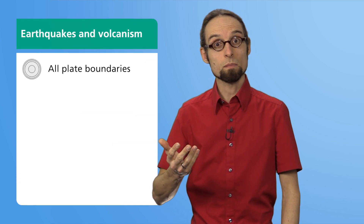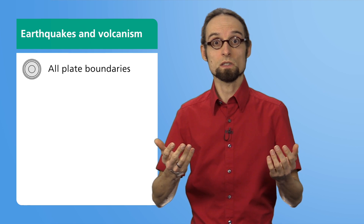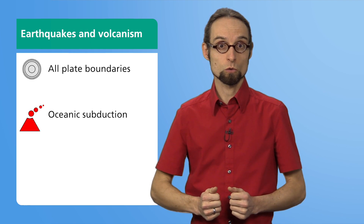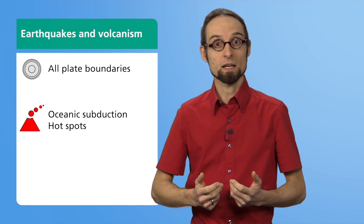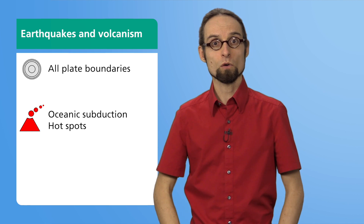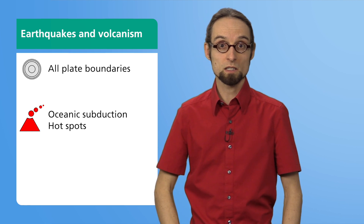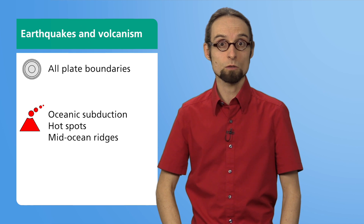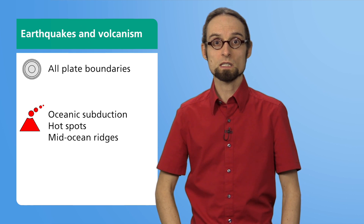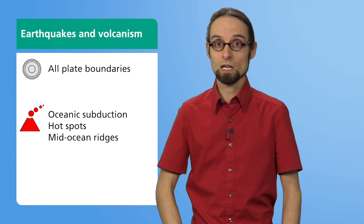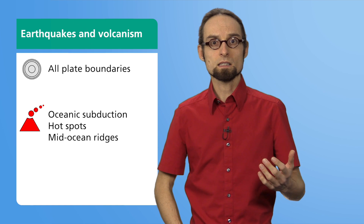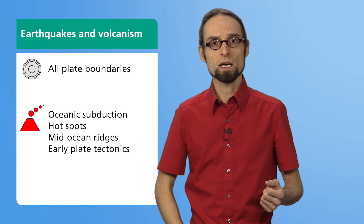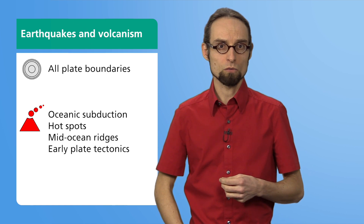Let me summarize once again. Earthquakes occur at all plate boundaries. Volcanism, on the other hand, typically occurs at convergent lithospheres or as a hotspot in the interior of the plates. Volcanism also occurs in a weaker form during the creation of new seafloor at divergent mid-ocean ridges. In addition, earthquakes and volcanism may also occur together at other plate boundaries, for example when plate boundaries change their type over the course of millions of years or when hotspots occur at plate boundaries.